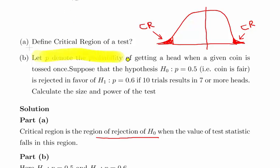Now let p denote the probability of getting a head when a given coin is tossed once. Suppose that the hypothesis, the null hypothesis p equals 0.5. Essentially this is a binomial distribution where we are looking at p as the probability of a fair coin, heads or tails each 50-50.